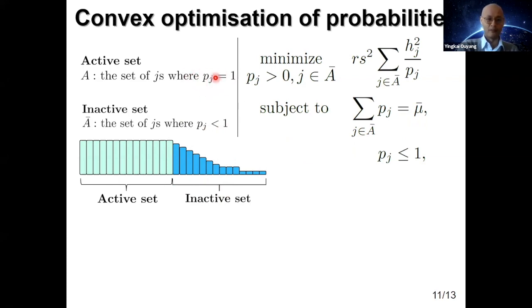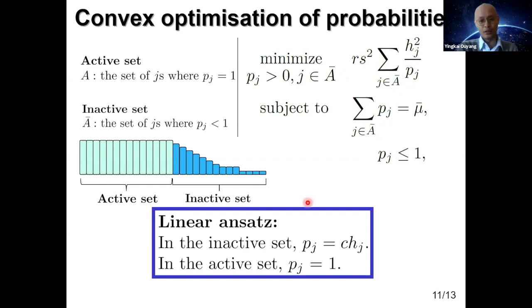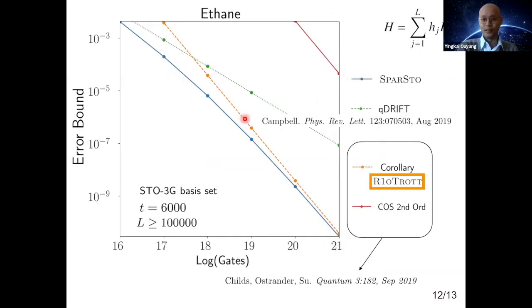Mu bar is the expected number of terms we pick in this so-called inactive set. The active set is the set of j's for which the probabilities saturate to 1, and an inactive set is the set of j's where the probability is strictly less than 1. Given that, we can form an optimization problem that is convex in p, has the objective function as convex in p, and linear constraints. We find the optimum solution using optimality conditions. Surprisingly, the very simple optimal solution is given by the linear ansatz, where the p's are proportional to the Hamiltonian coefficients.